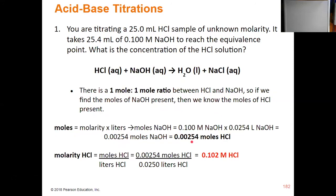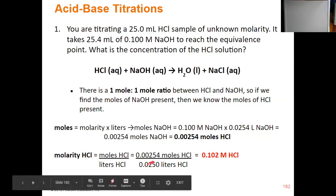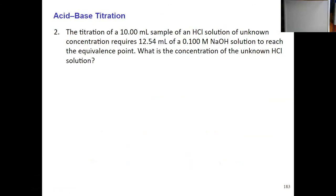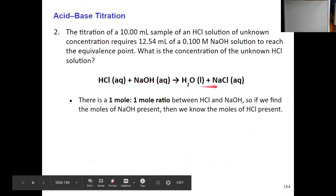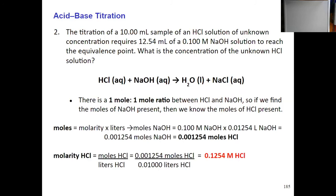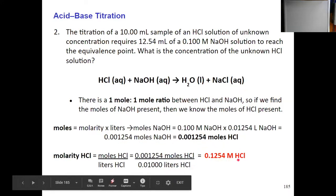Try this next one on your own. Again, the first thing you want to do is write out the balanced equation and note the one-to-one ratio between the acid and the base. When we find the moles of NaOH present, we will also know the moles of HCl. Next step: molarity times volume — 0.100 × 0.01254 — that gives us the moles of NaOH, which are equal to the moles of HCl here. Once we take that mole value and divide it by the volume, that gives us the molarity of the HCl.